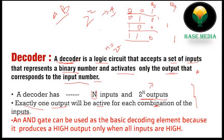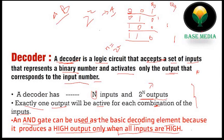An AND gate can be used as a basic decoding element. It produces a high output only for the activating input combination. Each combination of the input must be activated by an AND gate. So an AND gate is the basic decoding element.